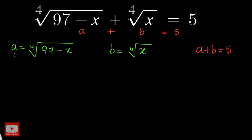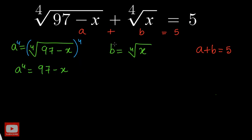Now let us come back to the equations that we have substituted. In this equation I would like to raise both sides to the power of 4, so that we can get rid of the fourth root. From here we get a to the power of 4 equal to 97 minus x. Do the same thing for b — raise b to the power of 4 on both sides, so that we get b power of 4 equal to x.